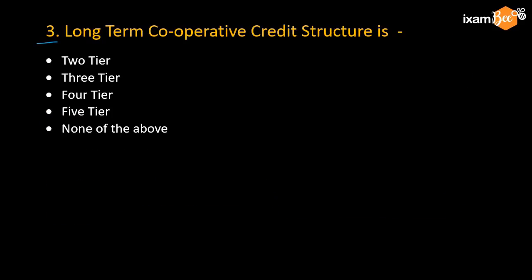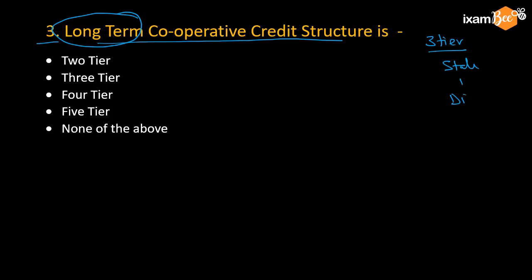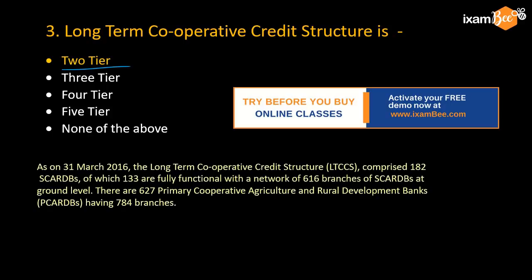Question number 3: what is the long-term cooperative credit structure? If you remember from an earlier video, the short-term cooperative credit structure is 3-tier: state level, district level, and then PACS — Primary Agriculture Cooperative Society. For the long-term cooperative credit structure, the answer is 2-tier. So a 2-tier structure exists: one at the state level and then directly at the ground level.